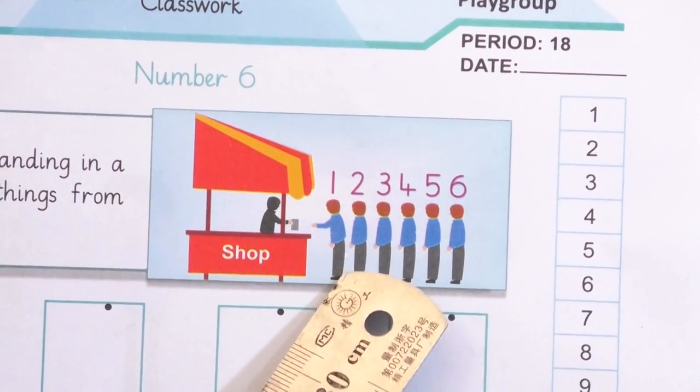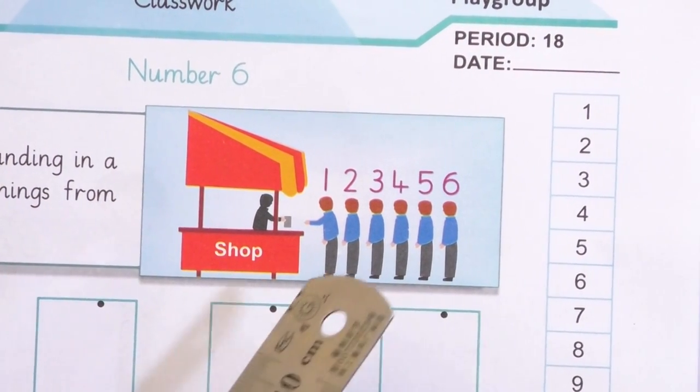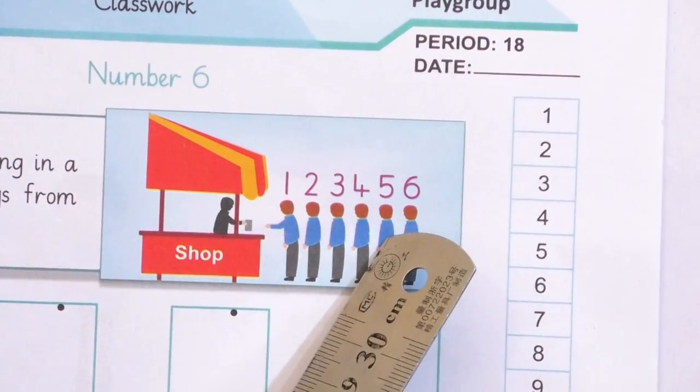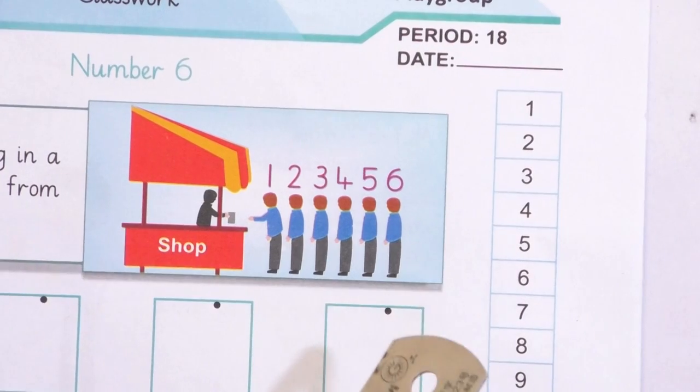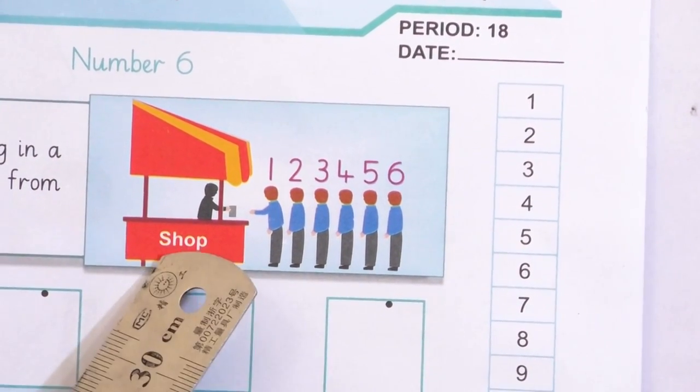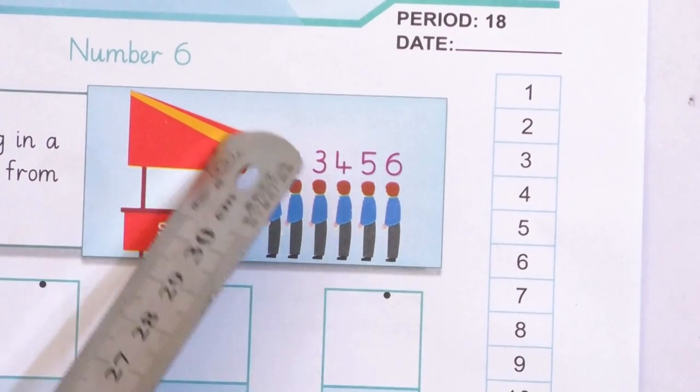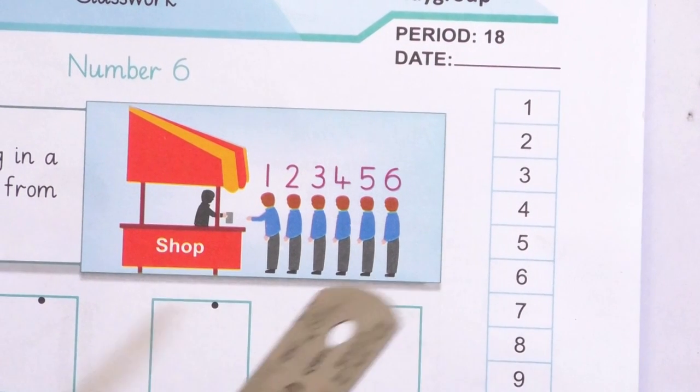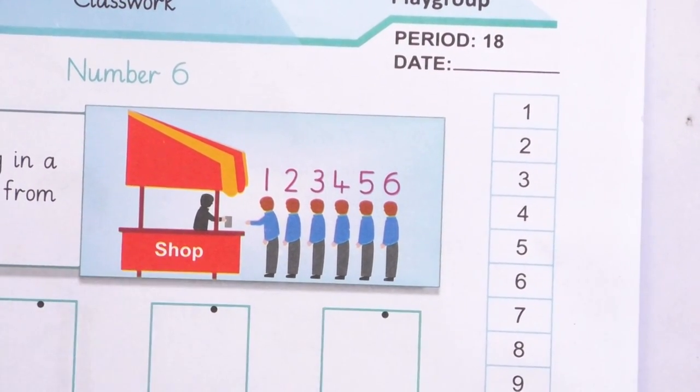Look at this picture. How many boys are standing here? Let's count. 1, 2, 3, 4, 5, 6. There are 6 boys standing. And what is this? This is a shop. 6 boys are standing in a queue to buy things from the shop.